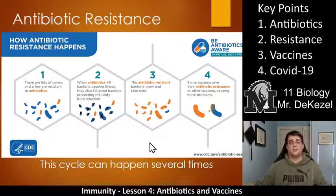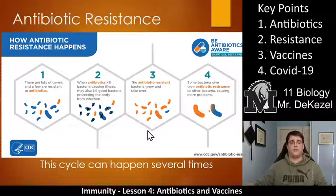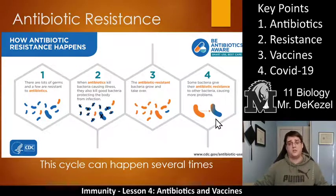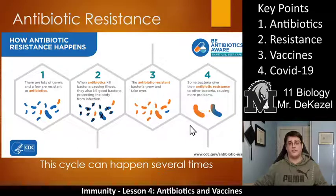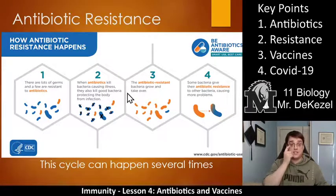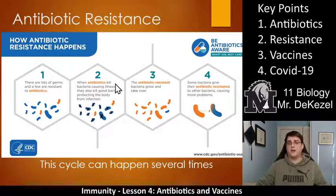Therefore we cannot treat that bacteria with antibiotics anymore. Some bacteria can even give their antibiotic resistance to other bacteria, which causes even more problems. So it is really important that you only take antibiotics when you have a known bacterial infection. This cycle can happen many, many times and you can get superbacteria which cannot be treated, and then your body must fight it off with the third line of defense on its own.